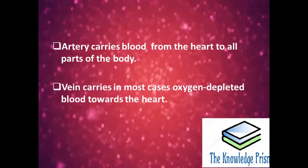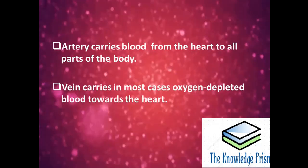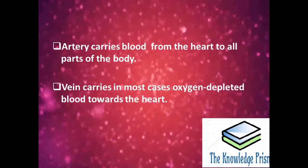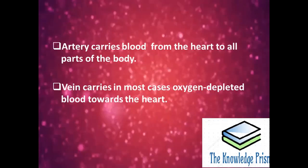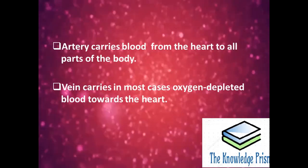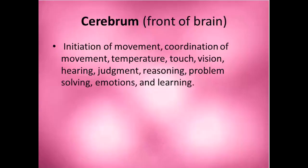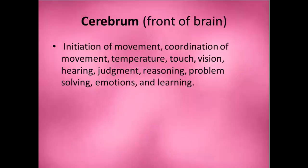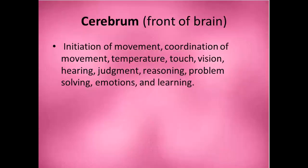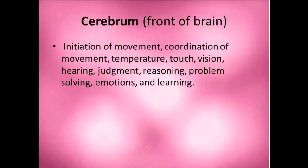An artery carries blood from the heart to all parts of the body. A vein carries in most cases oxygen-depleted blood towards the heart.